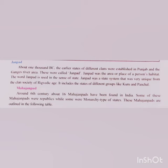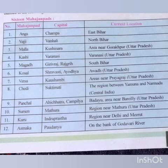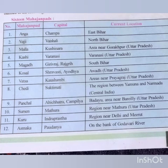Kosala was located to the northwest of Magadha, with its capital at Shravasti. The capital of Chedi was Suktimati, covering the present-day Bundelkhand region. Chedi was ruled by Shishupala. Vatsa was a hub of all economic activity, business, and trade, covering the modern district of Allahabad, with its capital at Kaushambi.